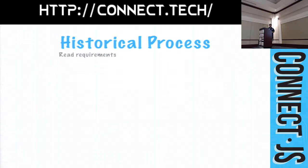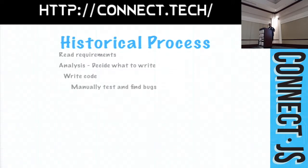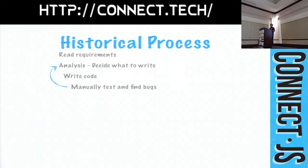Historically, software development looked something like this. You get requirements, do some analysis, figure out what you need to write, write that code, then test it, find some bugs, and fix them. That's your first feedback loop. A feedback loop is a process where you get information that you can make a decision about and then go back and make things better. Common examples are: I'm hungry, so I go eat something and feel better — or I'm still hungry, so I eat some more.